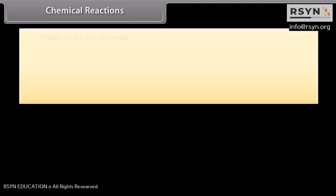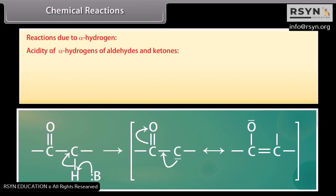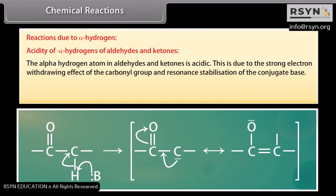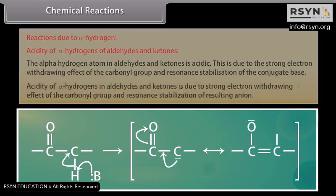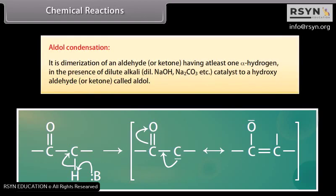Reactions due to alpha hydrogen. Acidity of alpha hydrogens of aldehydes and ketones: the alpha hydrogen atom in aldehydes and ketones is acidic. This is due to the strong electron-withdrawing effect of the carbonyl group and resonance stabilization of the conjugate base. Aldol condensation is the dimerization of an aldehyde or ketone having at least one alpha hydrogen in the presence of dilute alkali such as dilute sodium hydroxide or sodium carbonate.